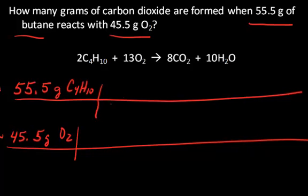In this case, if we start with 55 grams of butane and we want to convert to grams of carbon dioxide, we're going to use our stoichiometric coefficients to convert between moles of butane and moles of carbon dioxide. In order to get to moles, we have to use the molar mass first to convert from grams of butane to moles of butane.